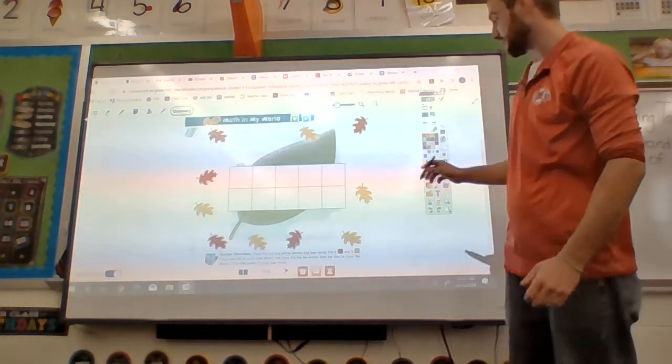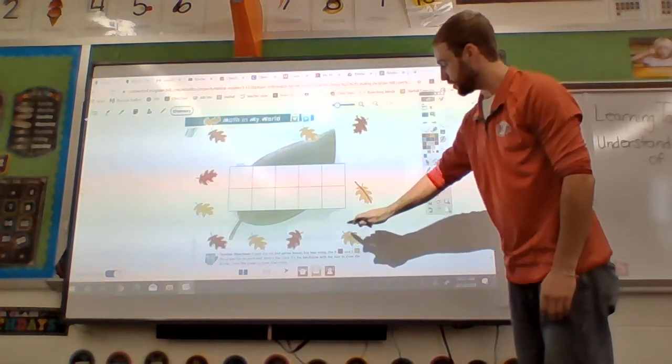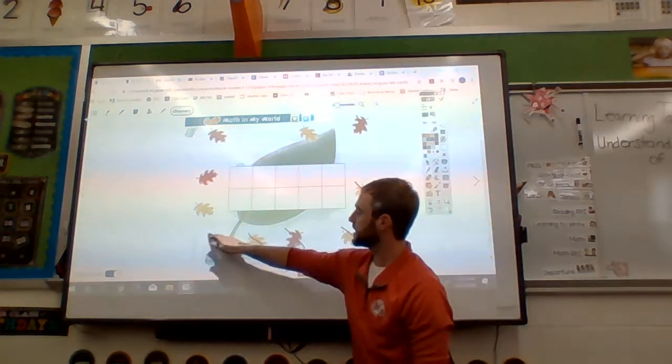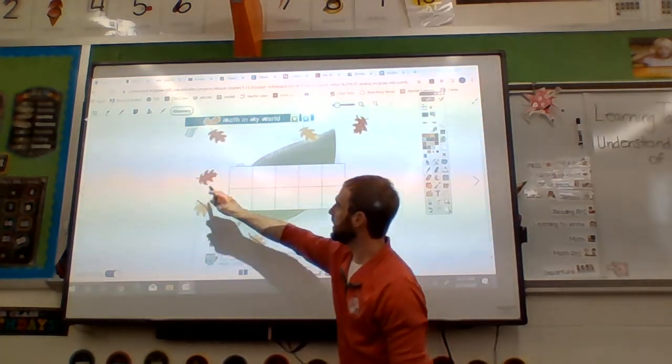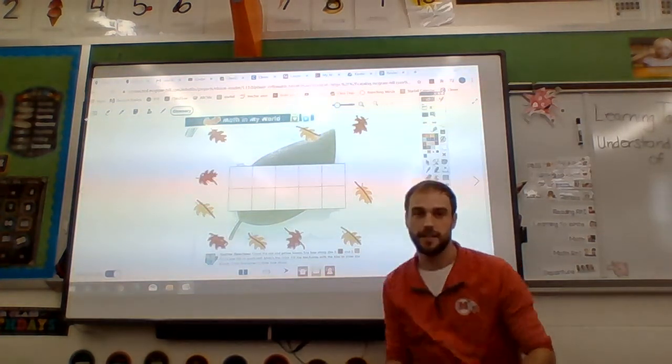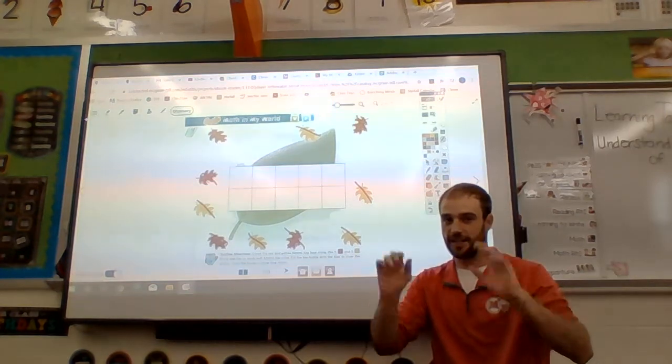But first let's count all the leaves. Count with me. 1, 2, 3, 4, 5, 6, 7, 8, 9, 10. How many leaves did we count? 10. Good.